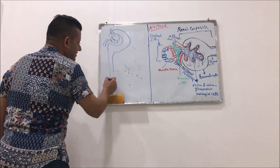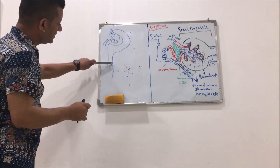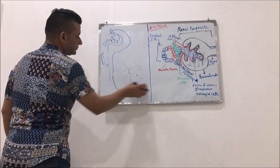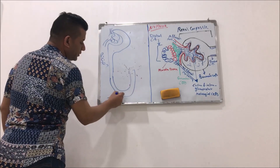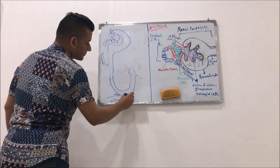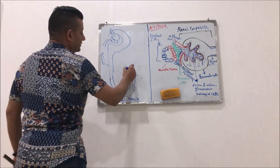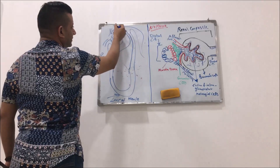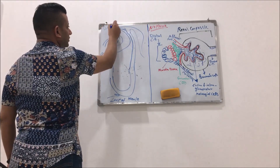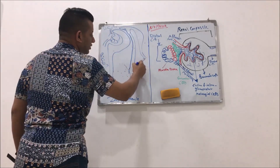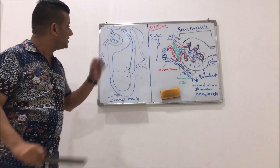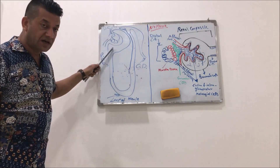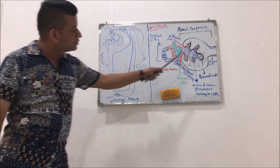Now, this structure is called the proximal convoluted tubule, and here is the loop of Henle. This part is called the distal convoluted tubule, while this part is called the collecting duct.